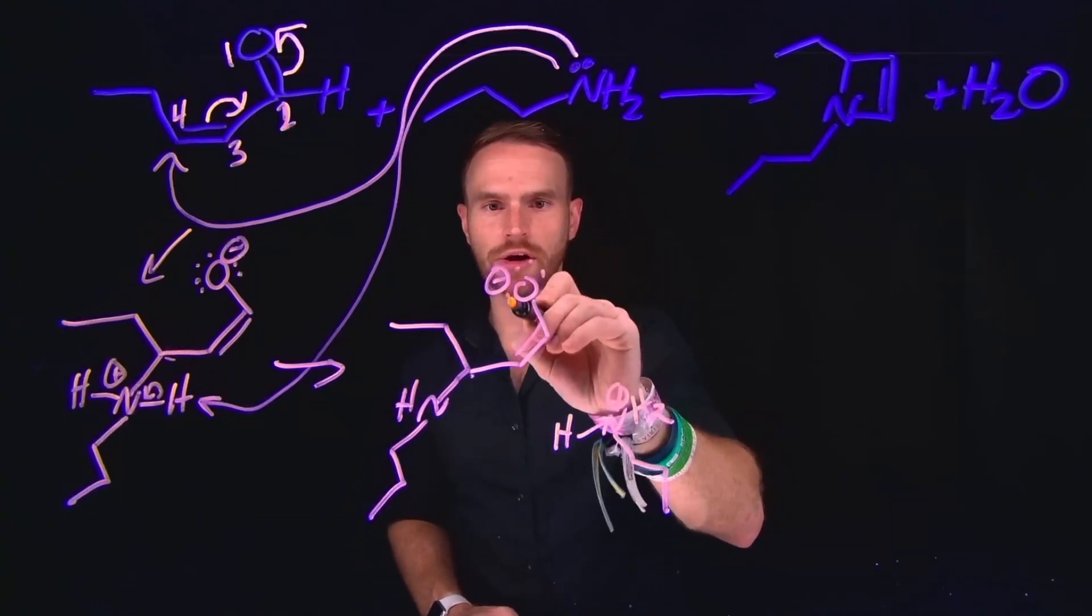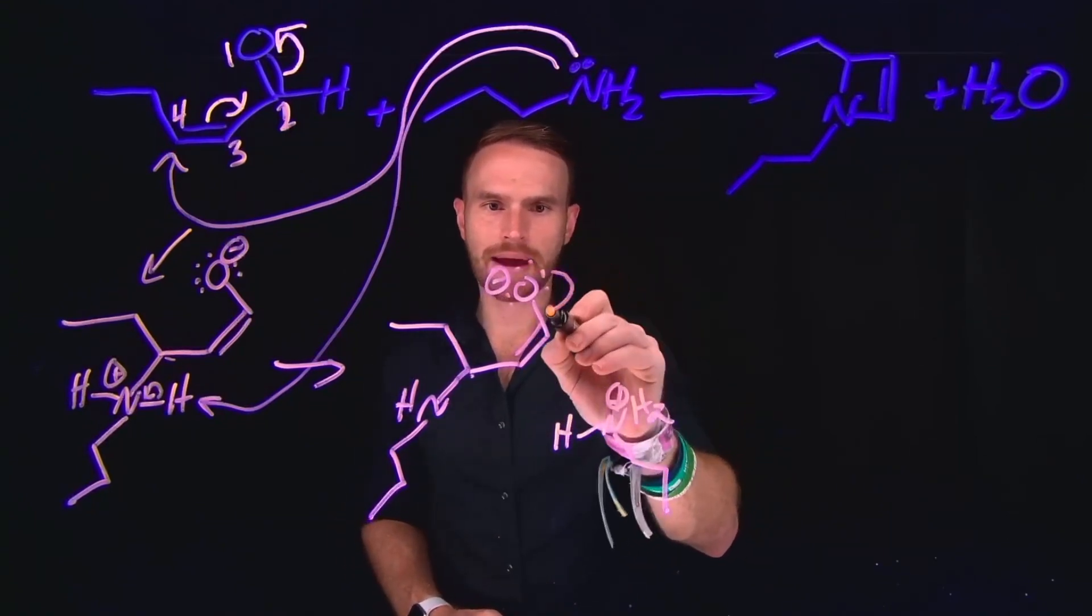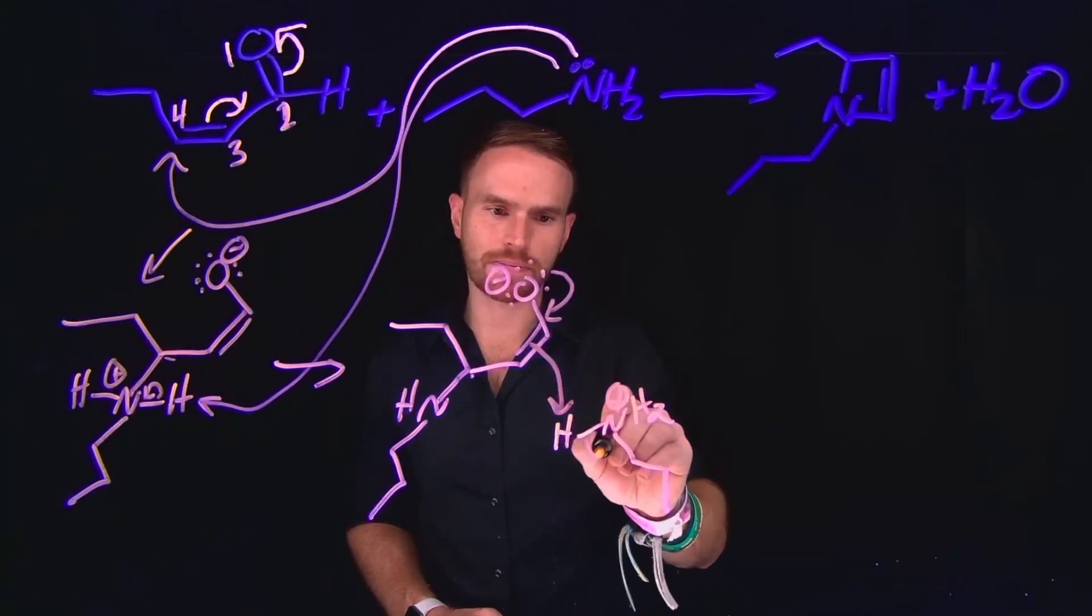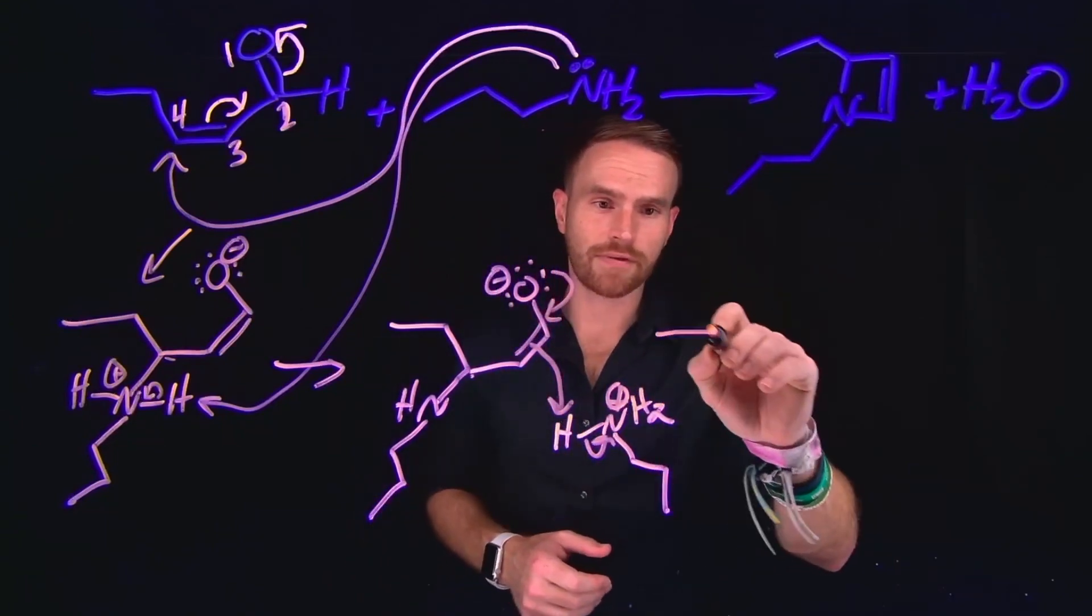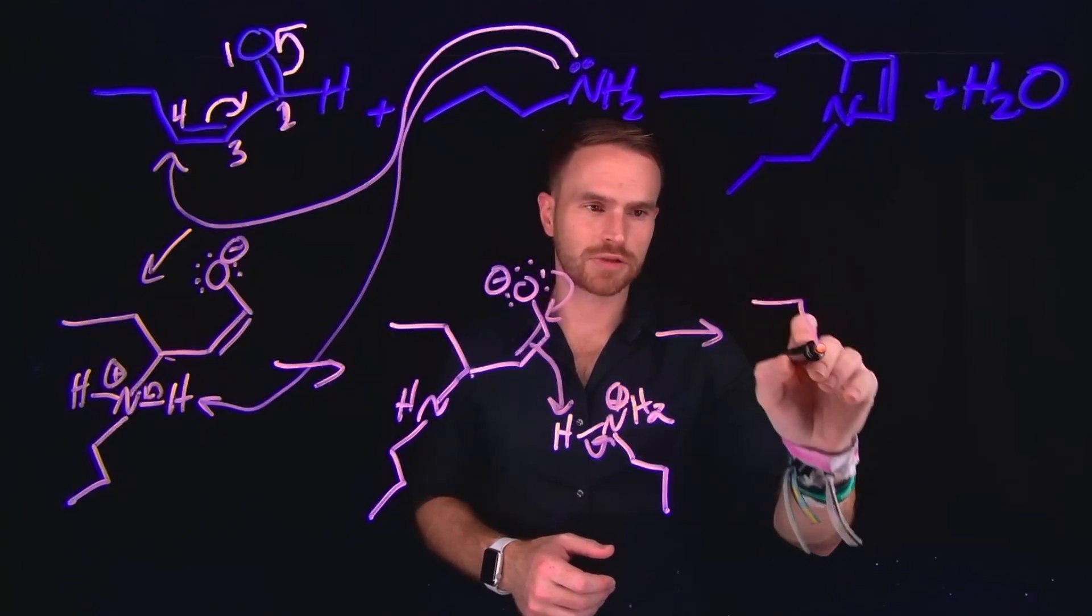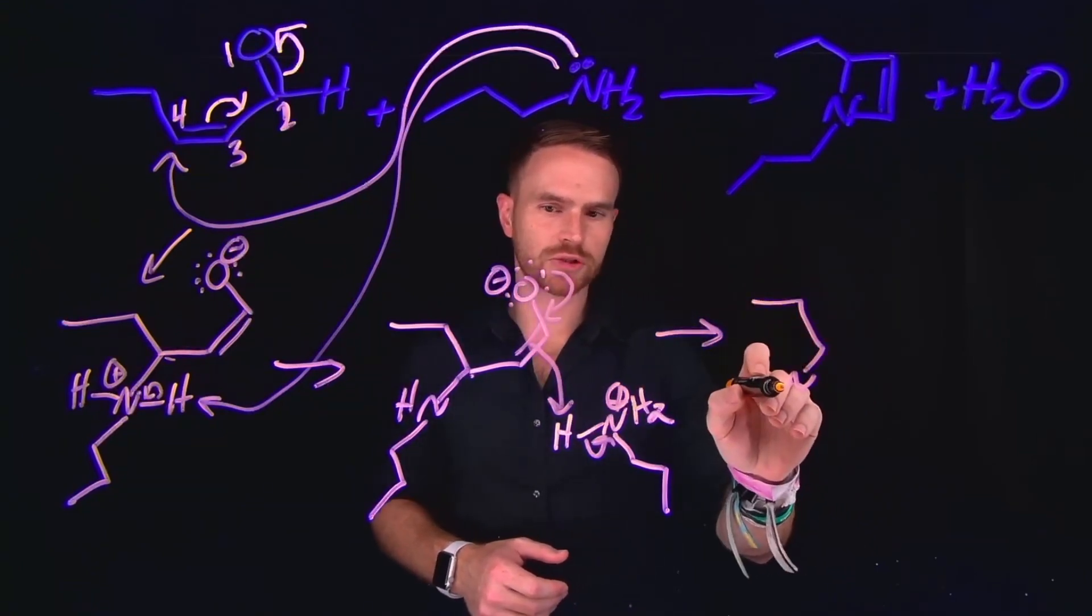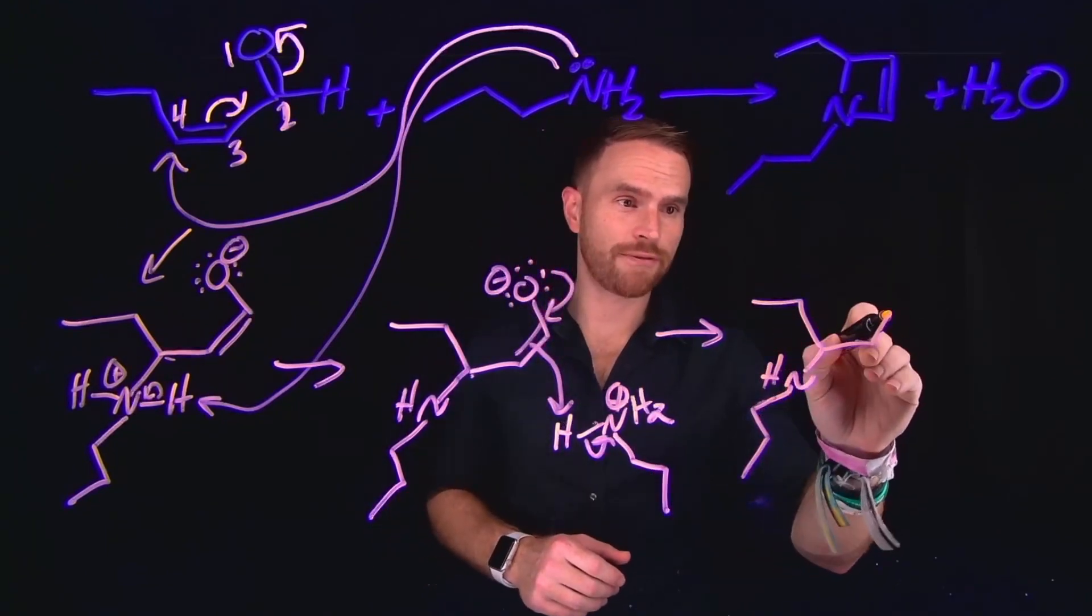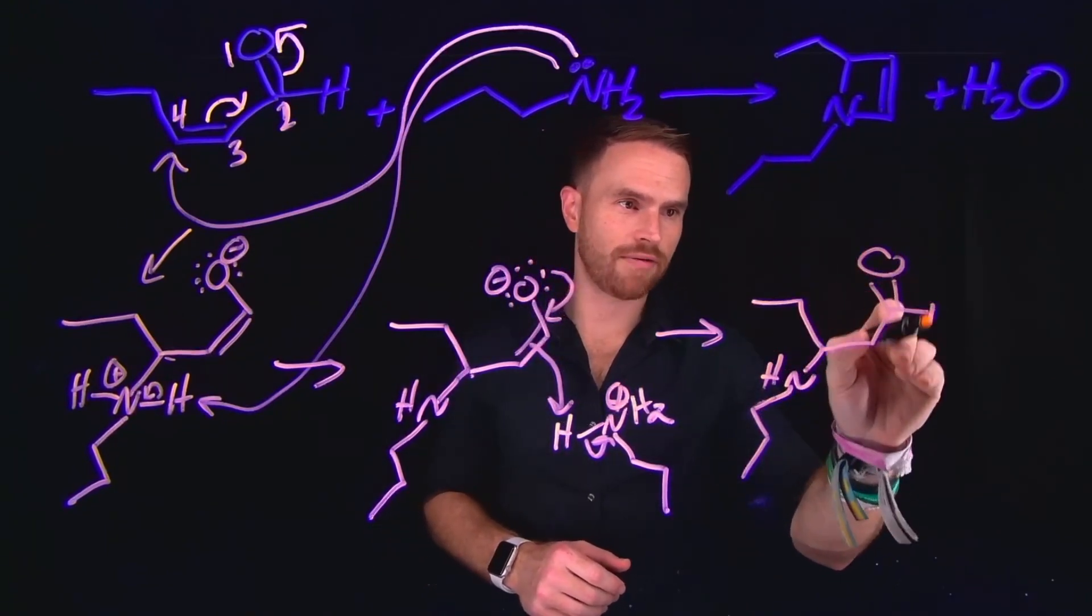From here, what can happen are the lone pairs on oxygen and our enolate can come back down and this will make the pi bond attack this proton to deprotonate it. And this is going to leave us with a neutral species at this step where our aldehyde has reformed. So now we still have our aldehyde.